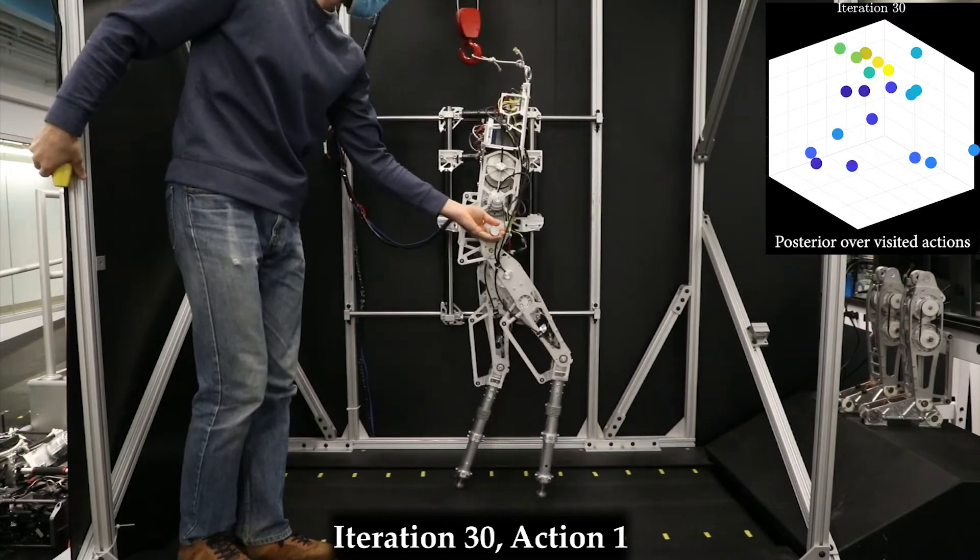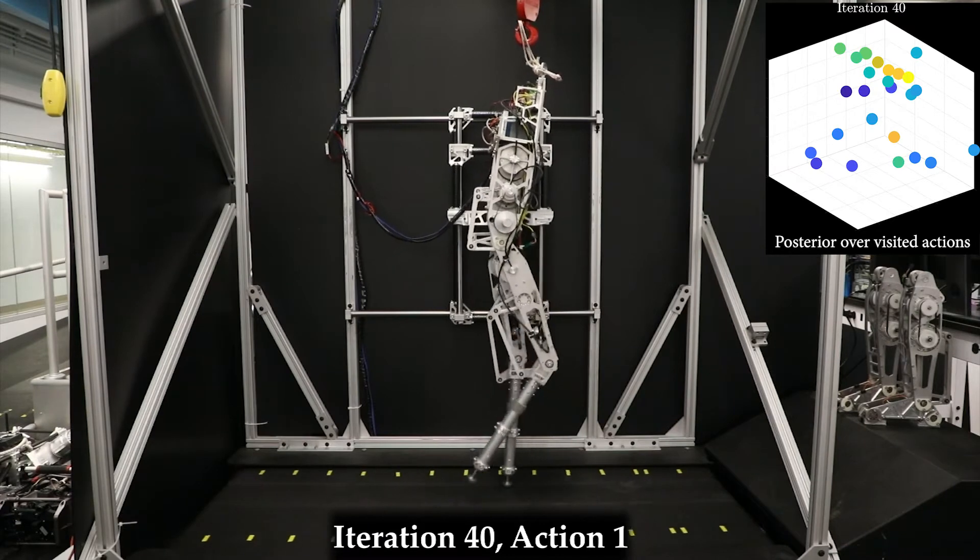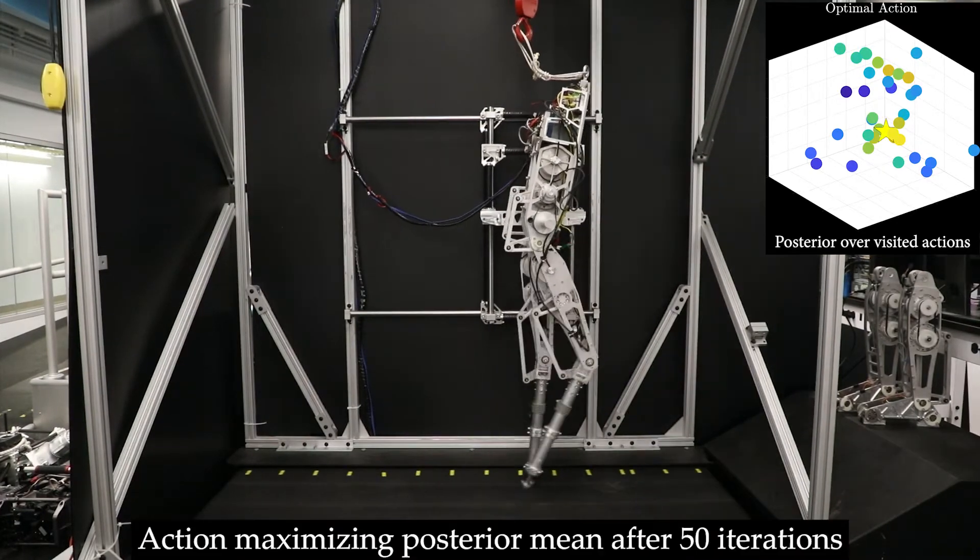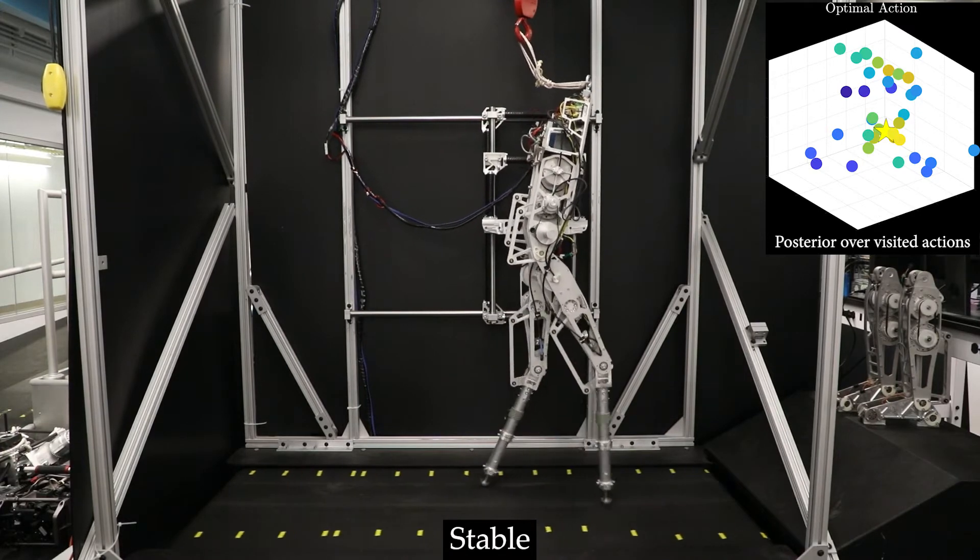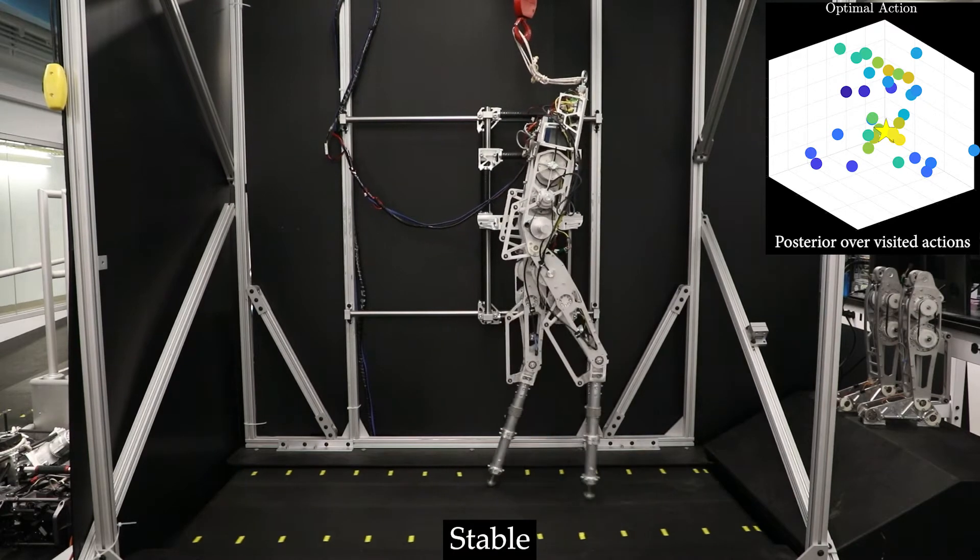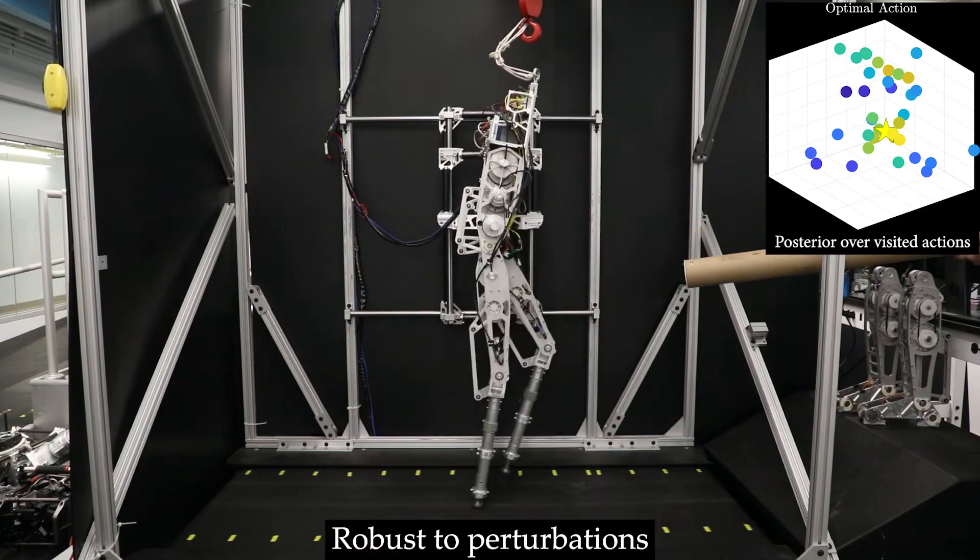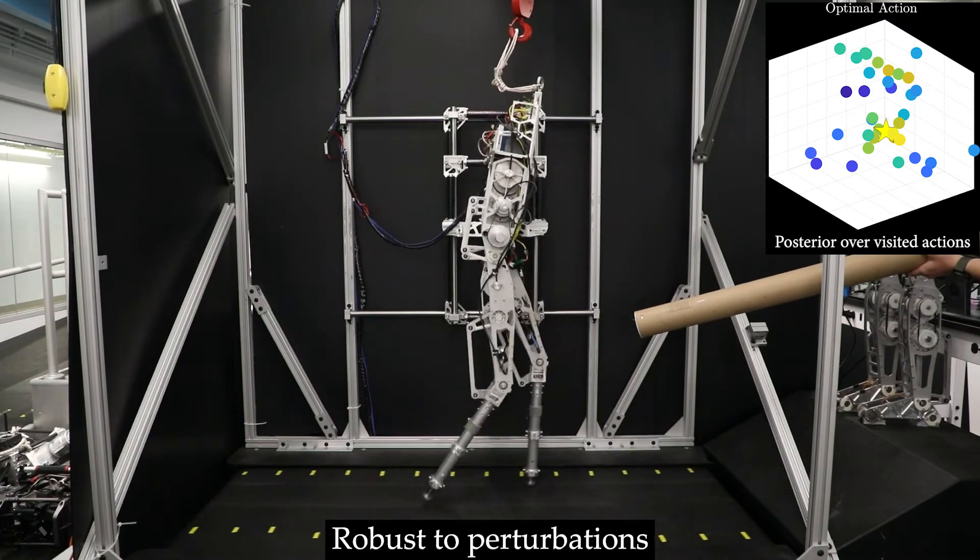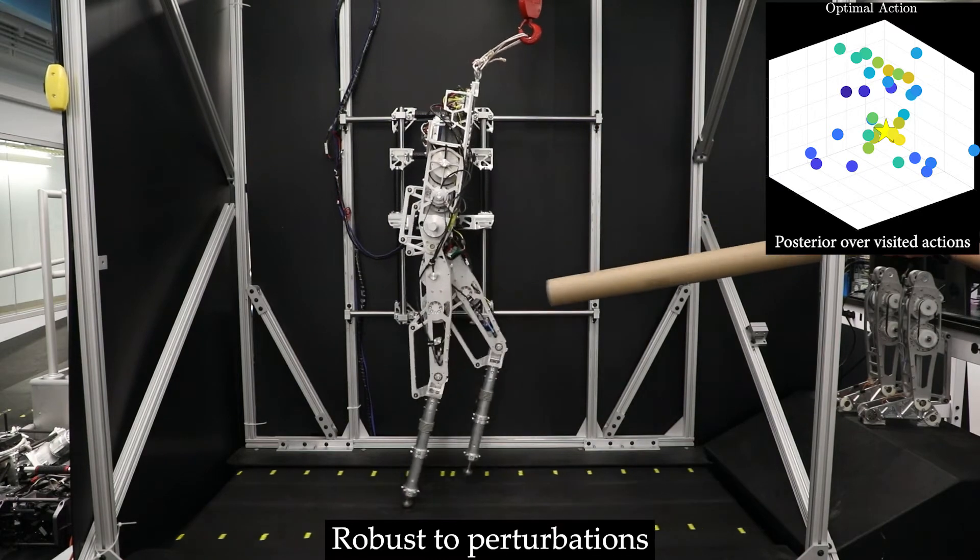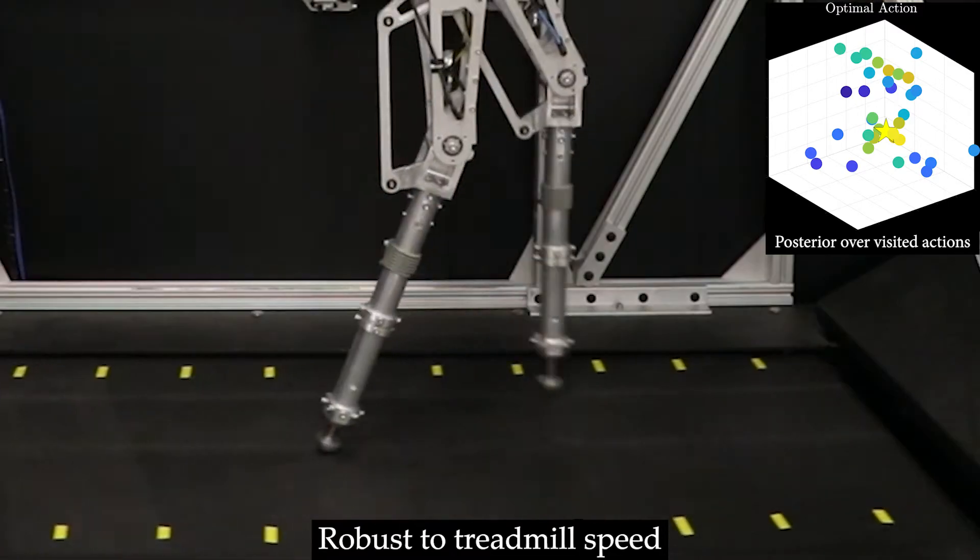The framework was run for 50 iterations, and as before, the experimental walking gradually improved with each iteration. And again, the set of learned constraint values resulted in experimental walking that was stable, robust to perturbations, robust to treadmill speed, visually appealing, and efficient.